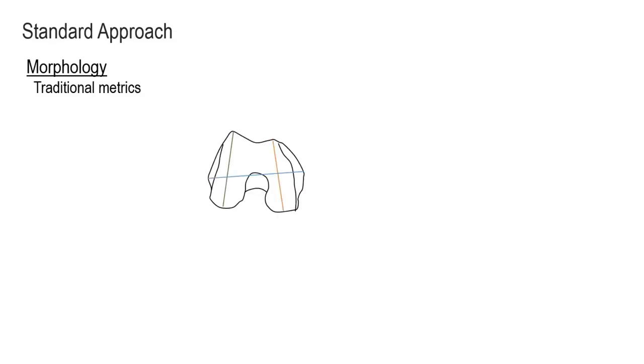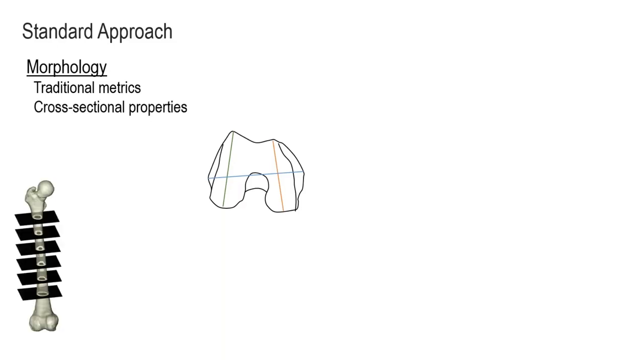I want to explore what I see as some standard methodologies in elucidating form-function relationships and point out a potential limitation. Within biological anthropology and paleoanthropology, a standard approach is to start by measuring morphology — we want to understand something about the shape, often from skeletal material or the musculoskeletal system. We quantify things with traditional metrics such as caliper measurements or osteometric boards, measuring the lengths of bones or the dimensions of joint surfaces. We might also measure muscle cross-sectional area or the types of muscle fibers within a single muscle.